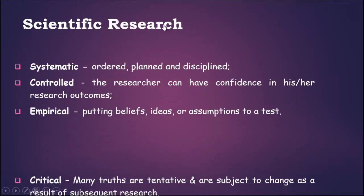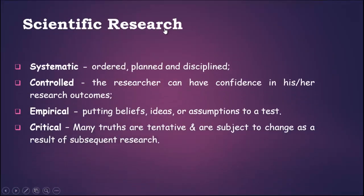When we say research, we are mostly referring to scientific research. Scientific research has the following properties: it is always systematic, controlled, empirical, and critical. Systematic means scientific research is always ordered, planned, and disciplined.